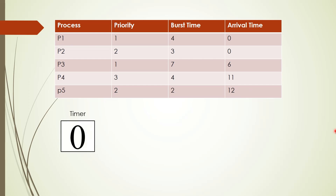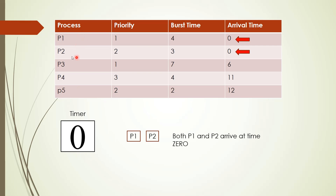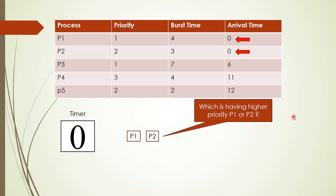Let us start with clock cycle 0. In clock cycle 0, we see that there are two processes P1 and P2 that have arrived. We have to see which one is having higher priority. P1's value is 1 and P2's value is 2, so between 1 and 2, P1 is having higher priority. So we will send P1 to the CPU.